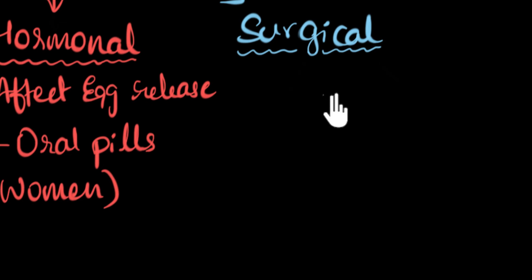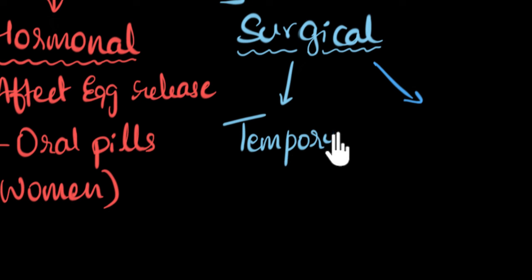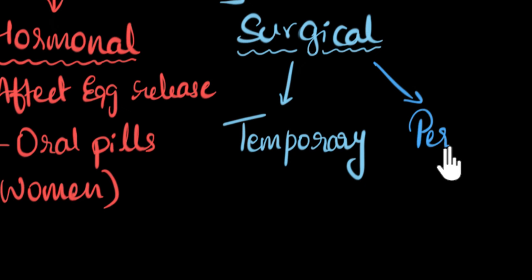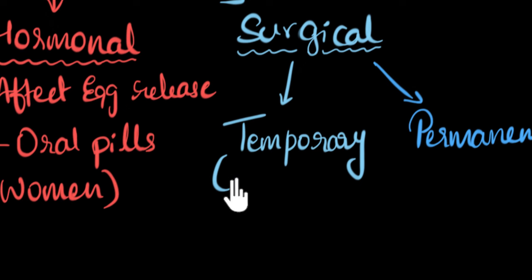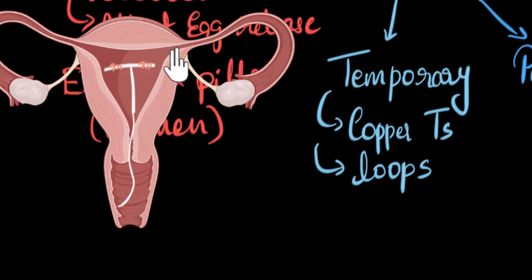As the name suggests, some kind of surgery needs to be performed. Depending upon the kind of surgeries, we can further classify into two kinds — temporary and permanent. The most common temporary ones would be copper T's and loops. Take the example of a copper T — here is a picture of a copper T installed inside the uterus. It's called copper T because it is T-shaped, very flexible so it can be inserted, and it contains copper. The copper attracts the immune system, and the immune system can kill the sperm cells — that's one way to ensure sperms don't reach and fertilize the egg.